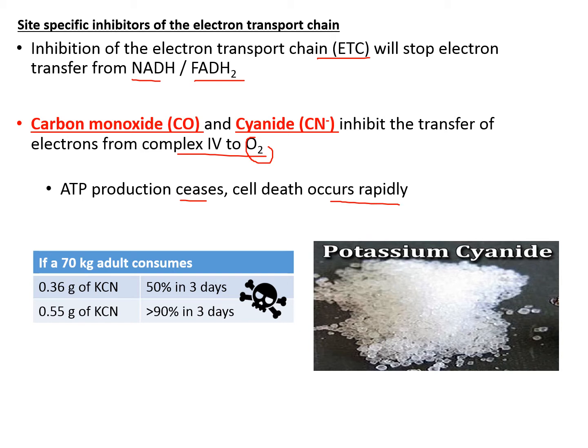For example, if a 70kg adult consumes 0.3g of potassium cyanide, the mortality rate within 3 days is 50%. And if one consumes up to 0.55g, then the mortality rate is over 90%. Just to put this into perspective, 0.5g is roughly the size of a 500mg vitamin C tablet. So, it is very toxic.